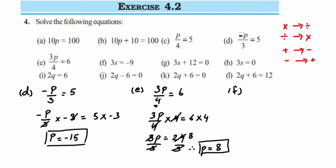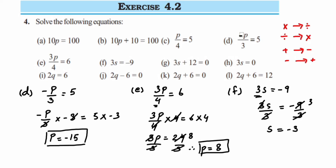Problem f: 3s = -9. The 3 is under multiplication, so divide 3 on both sides. The 3s cancel: -9/3 = -3. Therefore s = -3 is the answer.